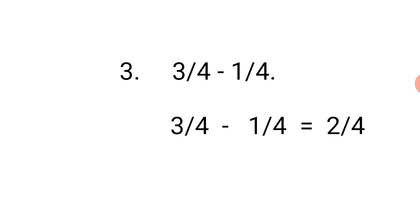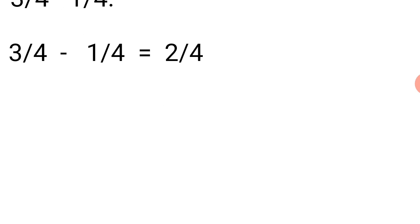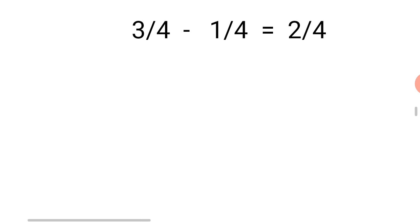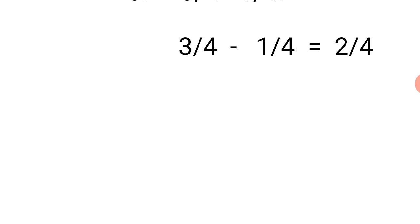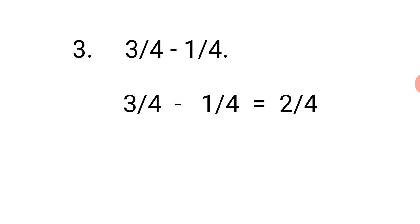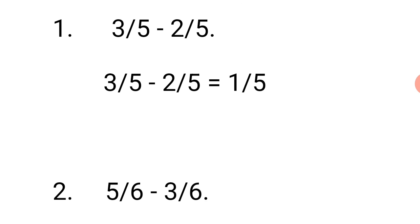Number 3: 3 over 4 minus 1 over 4. Let's count 3: 1, 2, 3. Let's take away 1: 1. Let's count the remaining: 1, 2. Our answer equals 2. Then the denominators are 4 and 4. We have to pick just 1 of them, so our final answer equals 2 over 4. Is it taken? Yes. I can hear some people saying yes, while some are saying no.